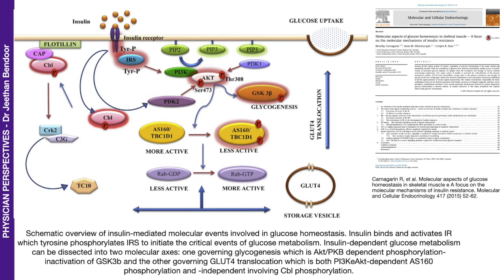An interesting illustration from this paper, 'Molecular aspects of glucose homeostasis in skeletal muscle: a focus on the molecular mechanisms of insulin resistance.' Three important characters here: the insulin receptor itself, which gets tyrosine phosphorylated; glycogenesis, that is formation or synthesis of glycogen; and the glucose uptake receptor, the GLUT4 receptor — the GLUT4 translocation process. One can expect problems if there are challenges with the formation or maintenance of these three characters.